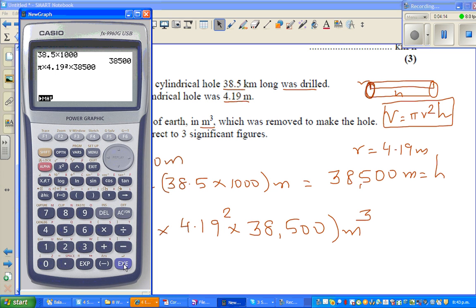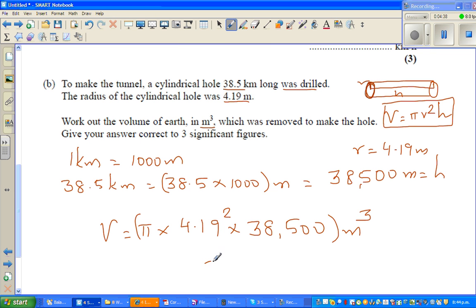So this is shift π times 4.19 squared times 38,500. You want the answer in 3 significant figures. The result is 2,123,433 meter cube.